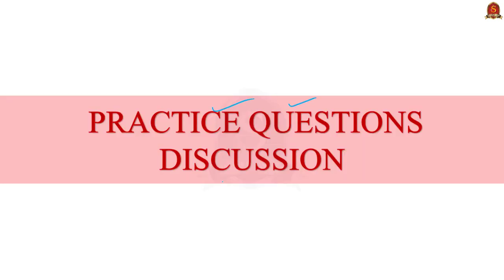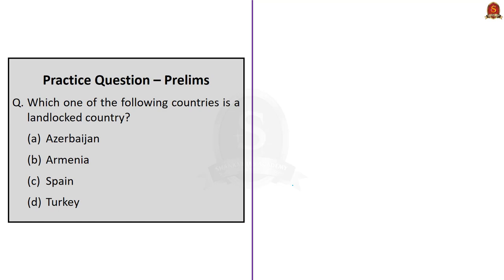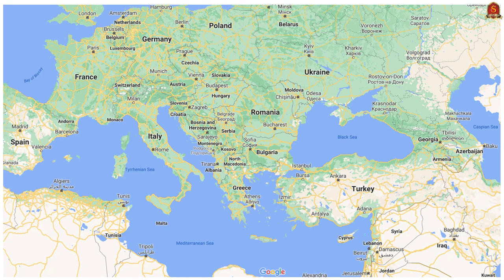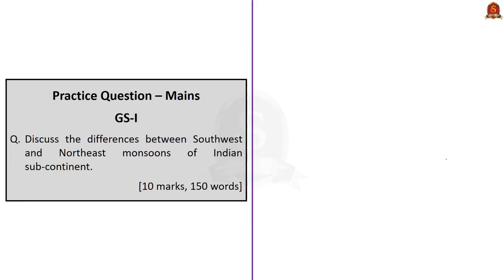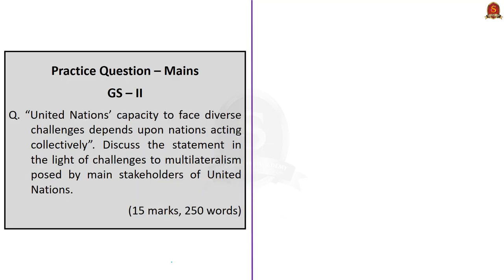Now let us move on to practice questions based on today's news analysis. First, a map-based question: which of the following countries is a landlocked country? The correct answer is option B, Armenia. Azerbaijan, Spain, and Turkey are not landlocked, but Armenia is. Second, a Mains question: discuss the differences between southwest and northeast monsoons of the Indian subcontinent — answer in 150 words. Third, another Mains question: 'United Nations capacity to face diverse challenges depends upon nations acting collectively' — discuss this statement in light of challenges to multilateralism posed by main stakeholders of the United Nations, answer in 250 words. Write your answers in the comment section for feedback.